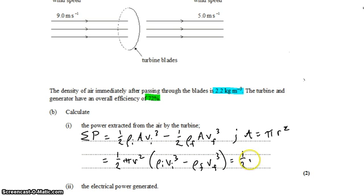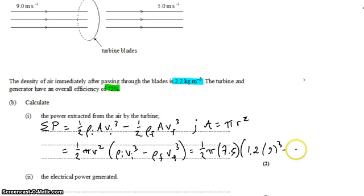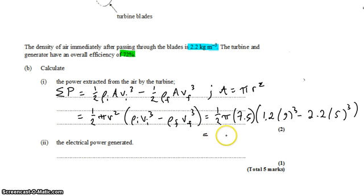So that's one-half π times 7.5 meters squared, times the initial density 1.2, times the initial velocity 9³, take away the final density 2.2, times the final velocity 5³. Punch that into your calculator and you get 53,000 watts. That's quite a lot of work for two marks, but there you have it.